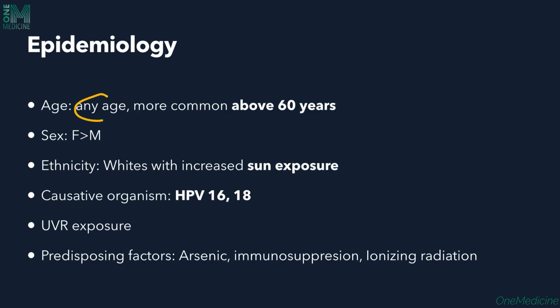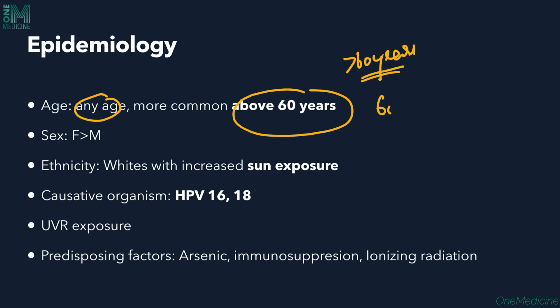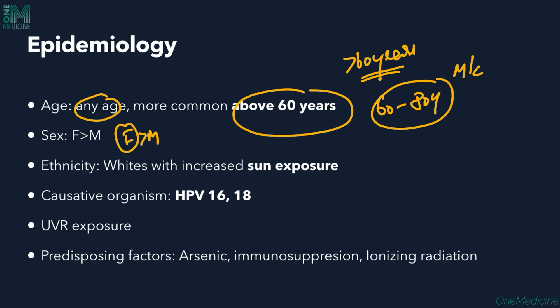Bowen's disease can affect any age, but since it's a carcinoma, it more commonly affects elderly people above 60 years. The 60 to 80 year age group is the most common. Females are more commonly affected than males. In terms of ethnicity, whites with increased sun exposure are more prone to getting Bowen's disease.